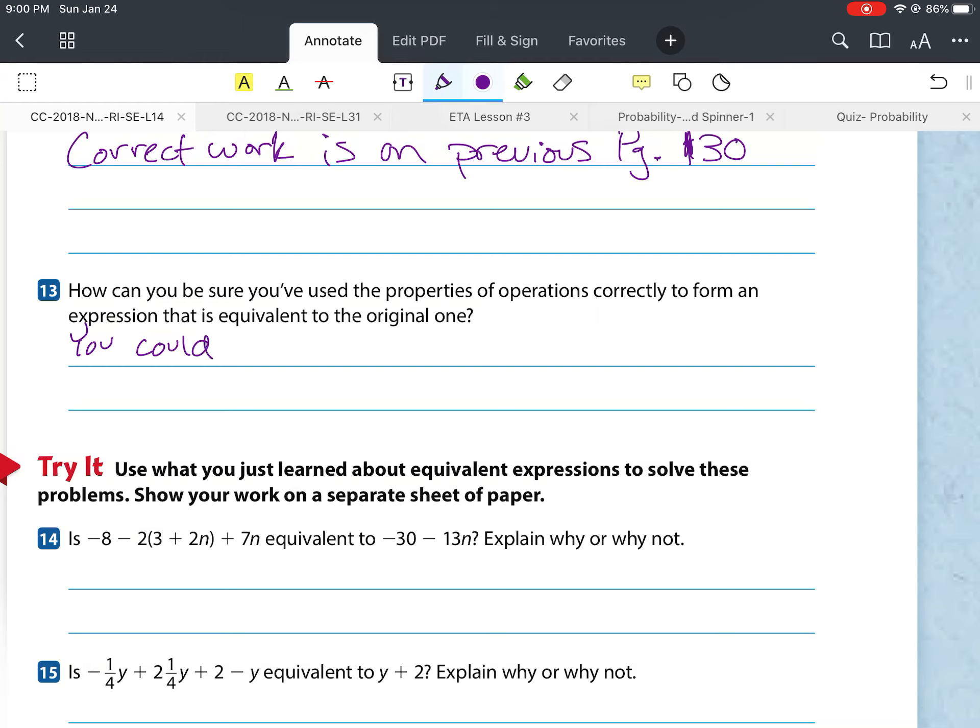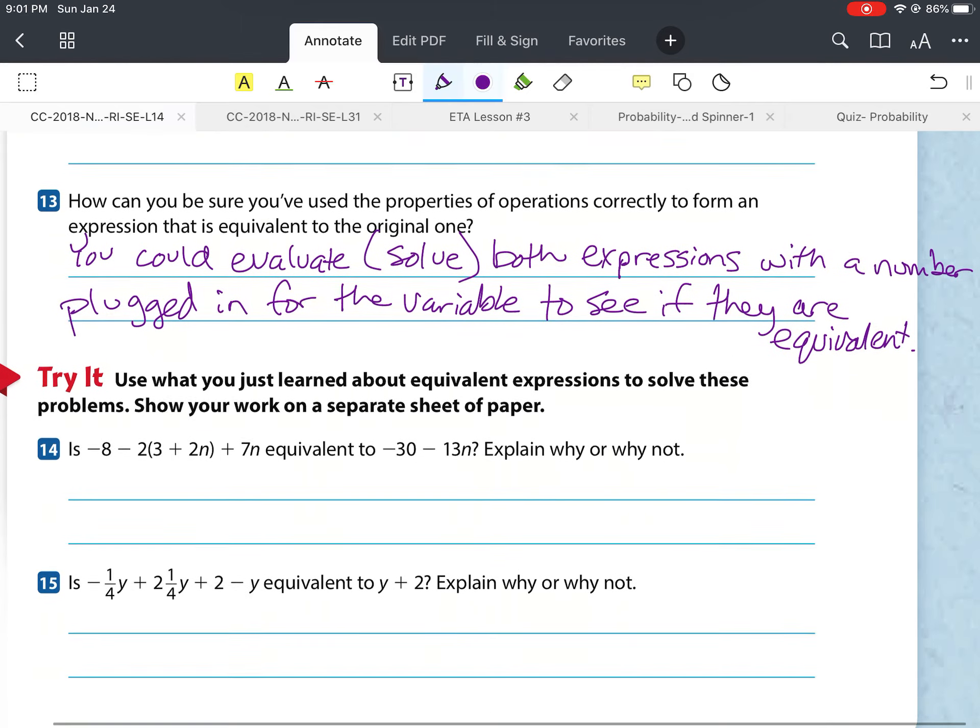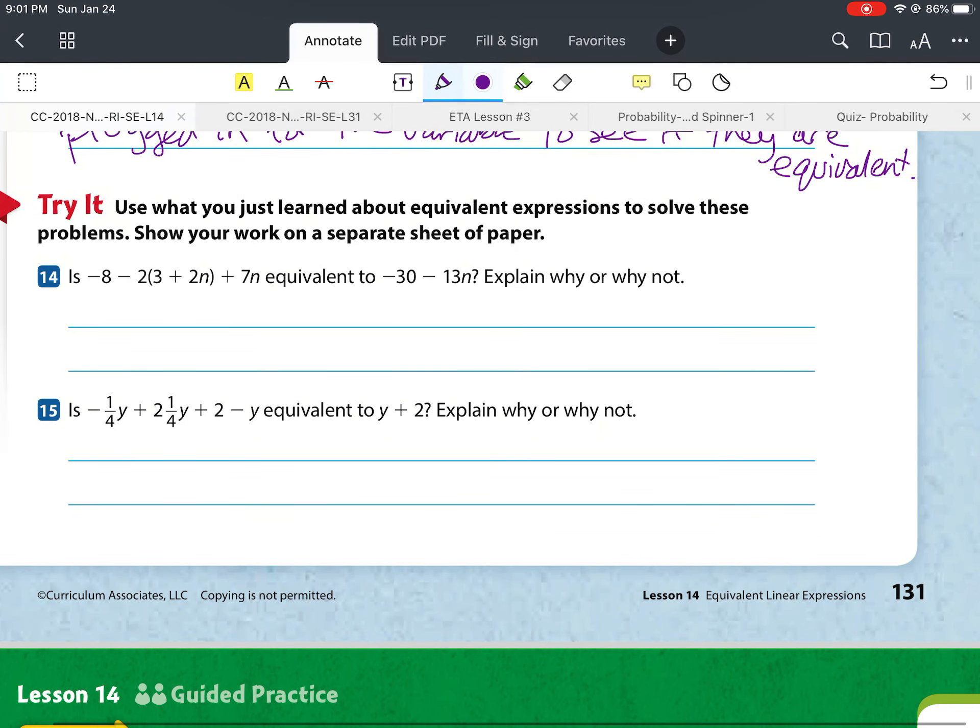Number 13, it says, How can you be sure you've used the properties of operation correctly to form an expression that is equivalent to the original one? You could evaluate, solve. Another word for evaluate is to solve. Both expressions with a number plugged in for the variable to see if they're equivalent.